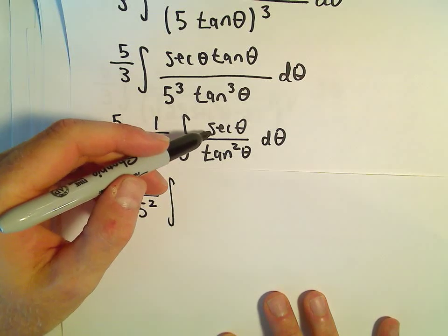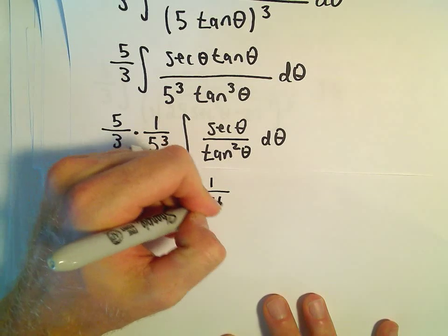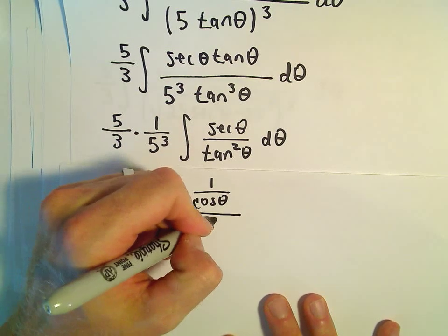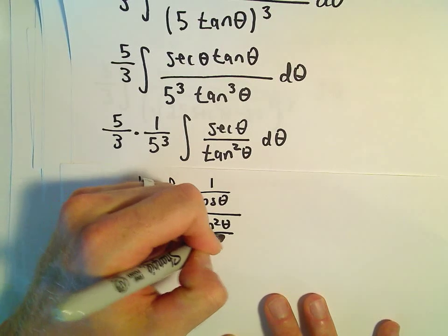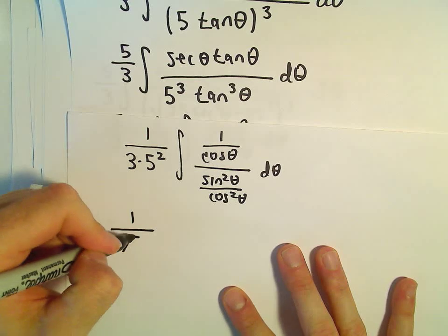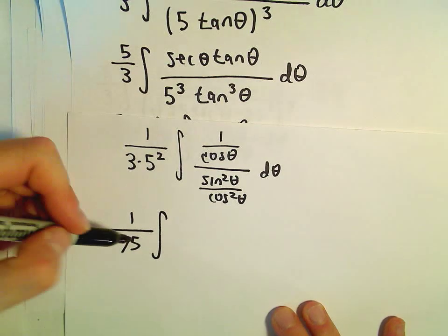I think what I'm going to do for this one is I'm going to rewrite it. So secant, well, that's just 1 over cosine theta. Tangent squared, that's going to be sine squared theta over cosine squared theta d theta. So let's see, 5 squared, that's 25 times 3, that will give us 1 over 75.